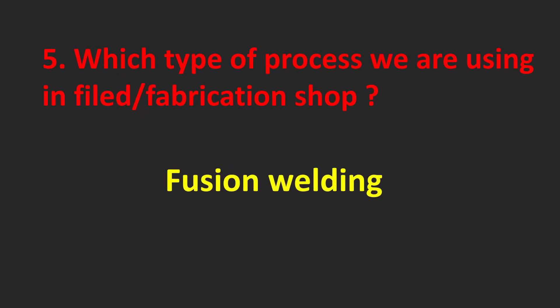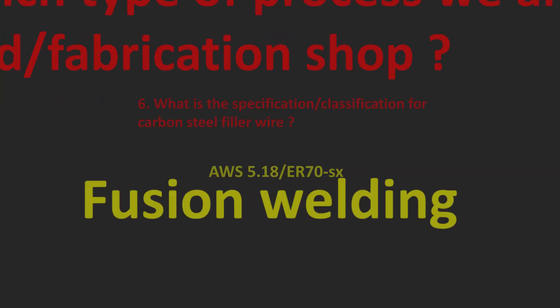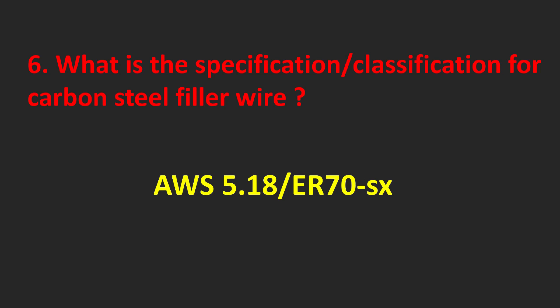Which type of process are we using in field fabrication shop? Fusion welding. What is the specification classification for carbon steel filler wire? AWS 5.18 ER70S-X.